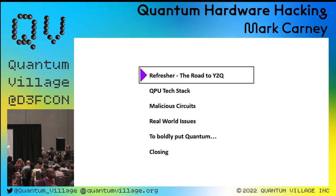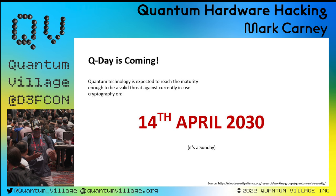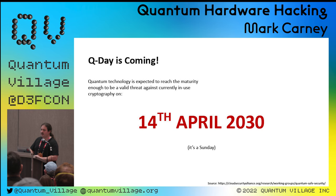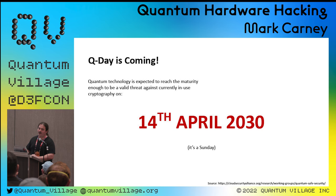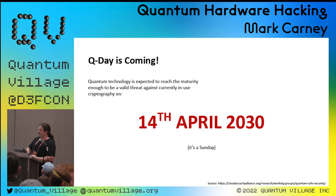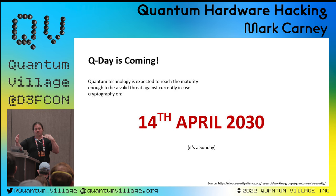Q day is coming. It is the 14th of April 2030, according to the Cloud Security Alliance. In case you're wondering, it's a Sunday — so don't take that weekend off. Make sure you're working, because that's when it goes down according to the Cloud Security Alliance. This seems a little oddly specific, but nevertheless, this is what we've been given.